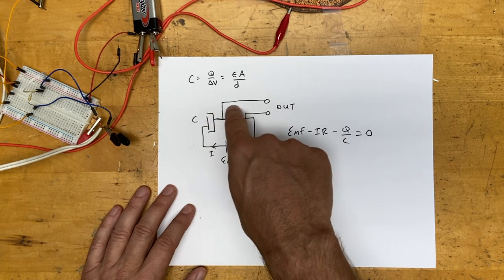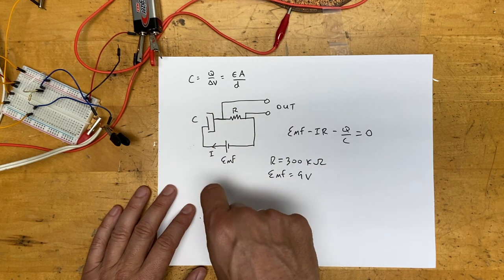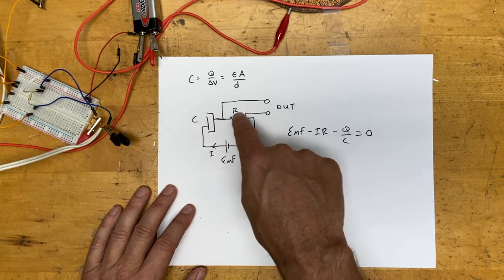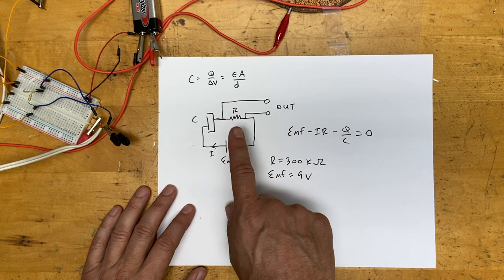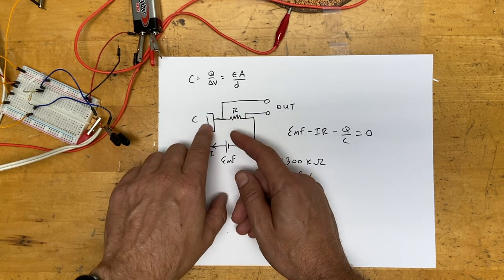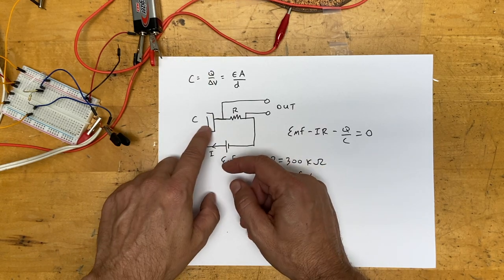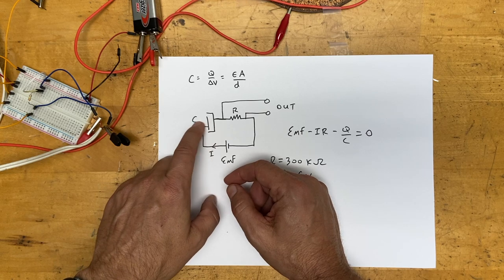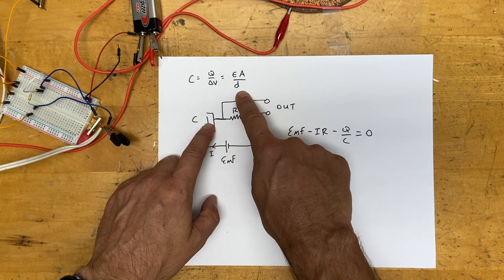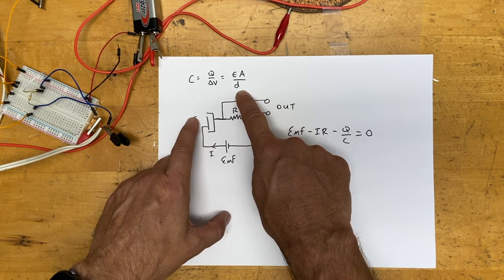This loop has to have a zero change in potential around the whole thing. We'll run current through there and charge it, then if I speak that will push this plate closer or further away, which will change d and by changing d I will change the capacitance.